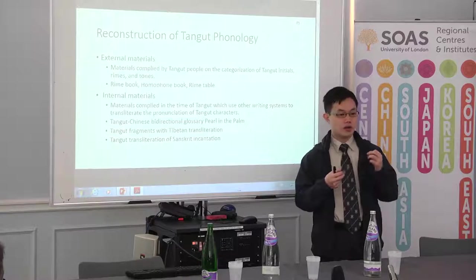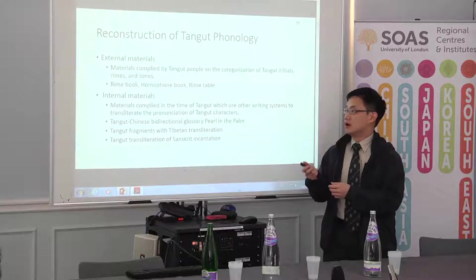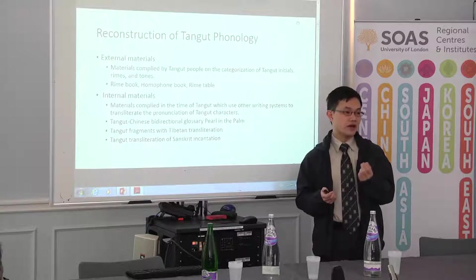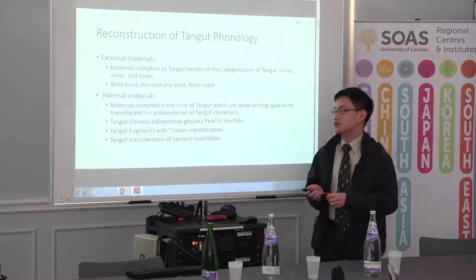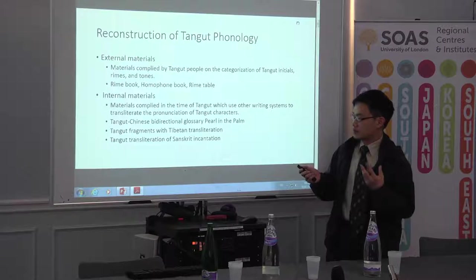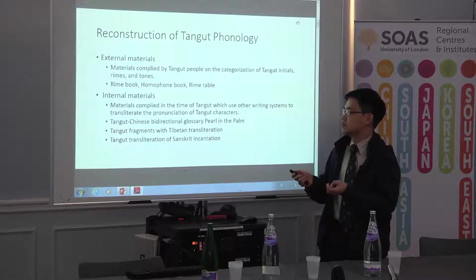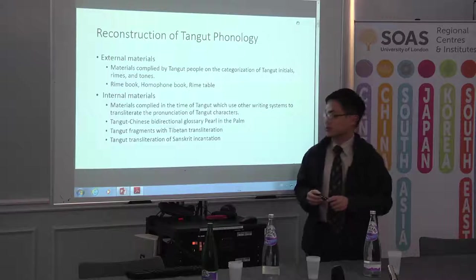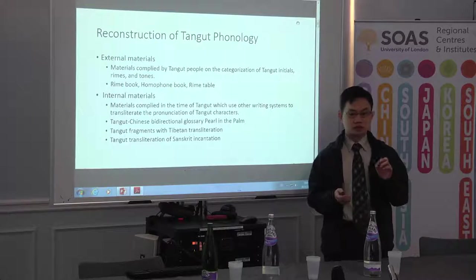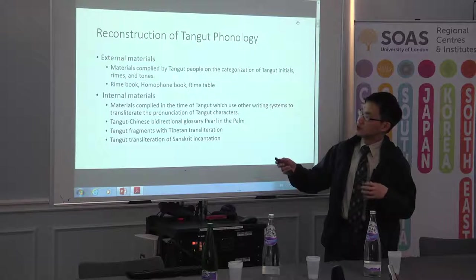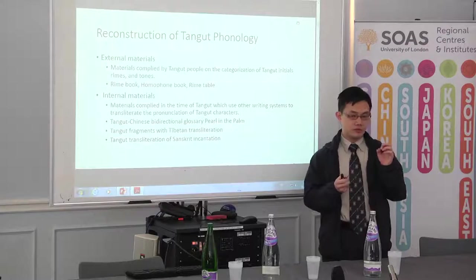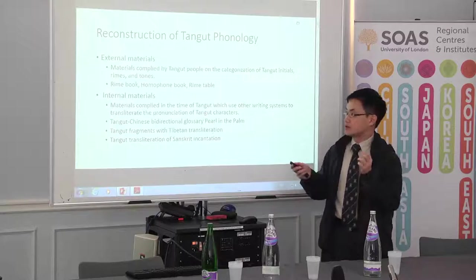After we get a framework on how many categories there are on the tones, on the initials, on the rhymes, we still don't know what they exactly are, because we don't know the sound value of individual categories. That's why we have to consult the internal materials, which are materials compiled in the time of Tangut, where Tangut people or Tibetan people or Chinese people use other writing systems to transliterate the pronunciation of Tangut characters. These materials provide information on the sound value of individual characters, and combining this with the framework summarized by the external materials, we can know the approximate sound value of individual categories of initials and rhymes.